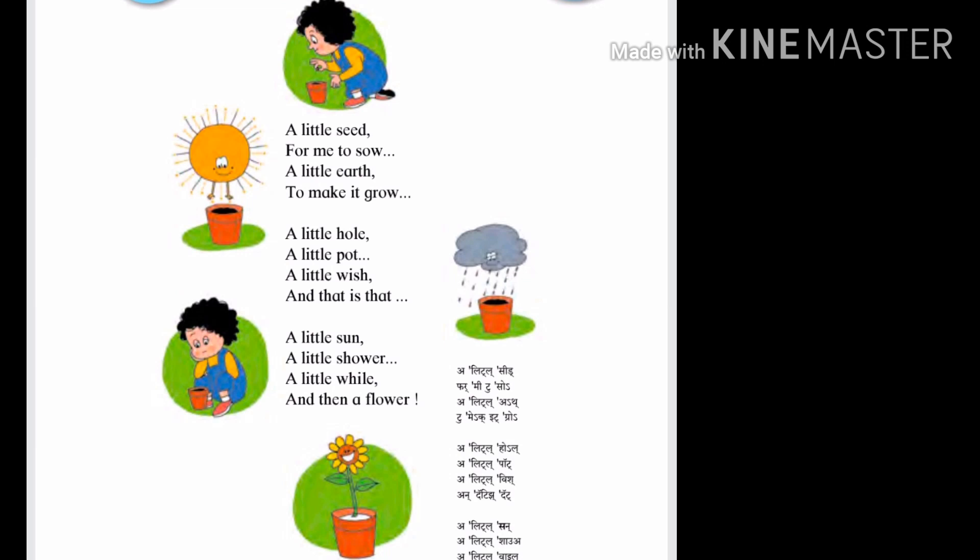This little child is saying that hole means chidra, wish means ichcha. That is that — manje tevde aani tevdees. This little child is saying that no more efforts are required to grow or sow a plant — a little pot, a little seeds and a little wish; these things are sufficient to grow or sow a plant.